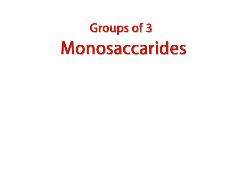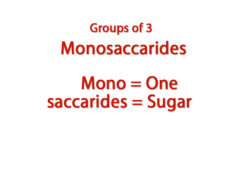Thinking in groups of three, the first of the three groups of carbohydrates is called the monosaccharides. If you know what the different parts of words mean, that can help you discover what we are talking about. Mono means one, and saccharide means sugar. So we are talking about a single sugar molecule, and it looks like this.